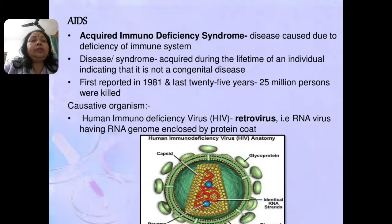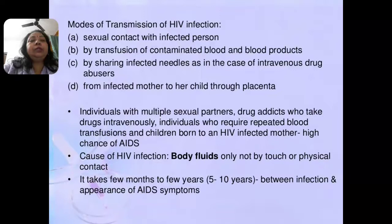After that, near about 25 million persons were killed by this disease. The causative organism responsible is the Human Immunodeficiency Virus, HIV. HIV is a retrovirus that uses RNA as its genetic material. This RNA genome is enclosed in a protein coat called the capsid.